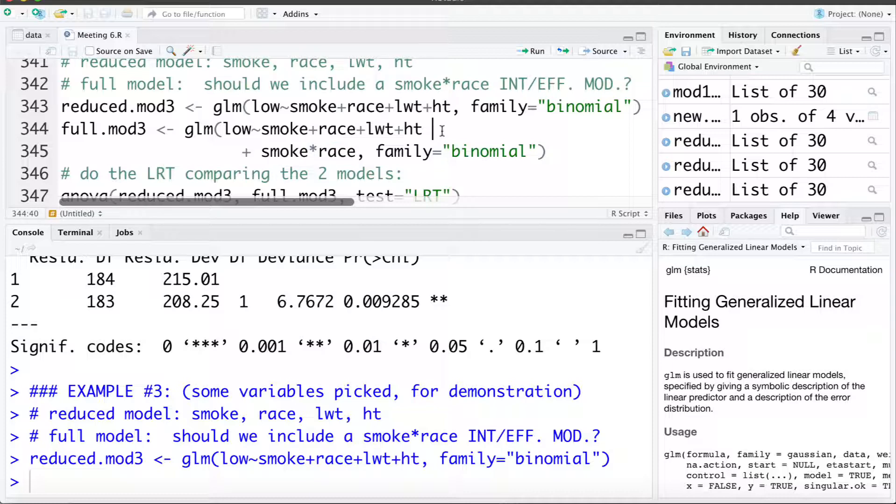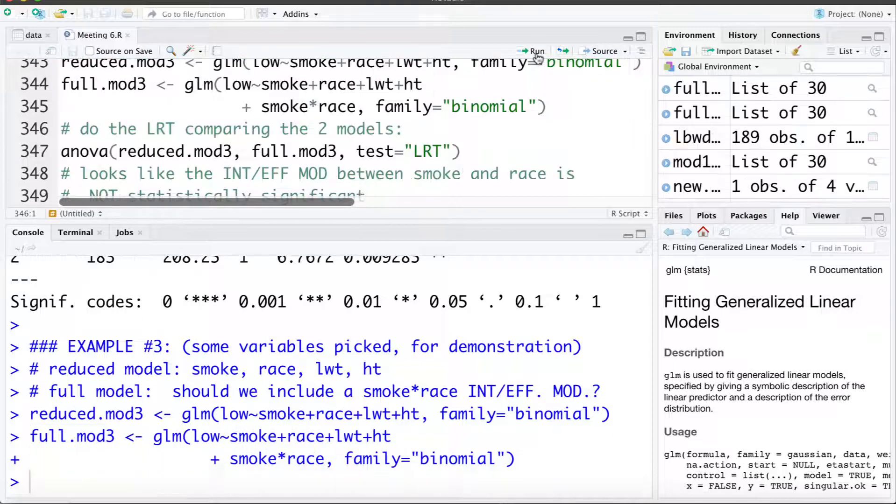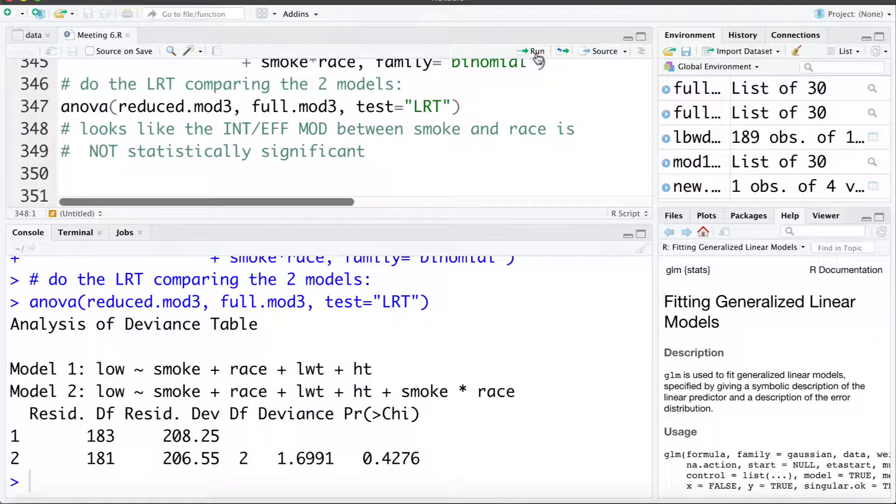So we're going to add this term and see if the full model is significantly better, if that interaction term is statistically significant. So let's fit the full model. And again we can do the likelihood ratio test in the exact same way. And here we see this interaction term is not statistically significant. So these are just a few examples of ways we can make use of the likelihood ratio test.